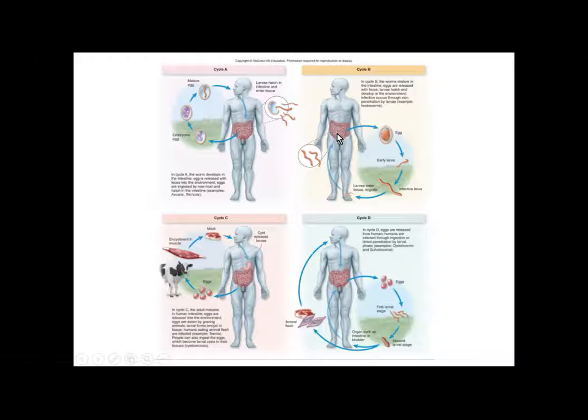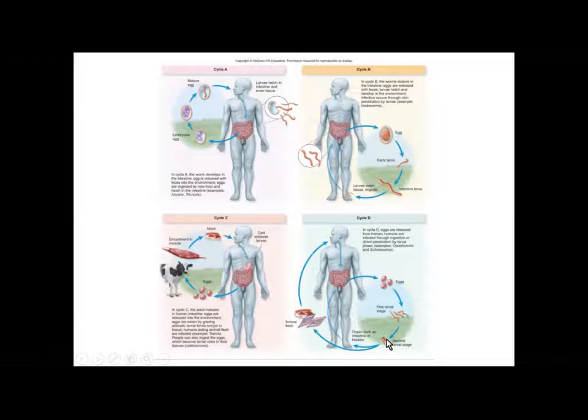In cycle C, this involves a secondary host. Humans expel eggs, the secondary carrier ingests them, the eggs hatch within the carrier's tissue, and we consume the infected tissue to redevelop the infection. In cycle D, we consume infected animal flesh and then expel eggs. Those eggs hatch into a secondary larval stage that can either directly enter the human or enter an animal that the human later eats, causing reinfection.